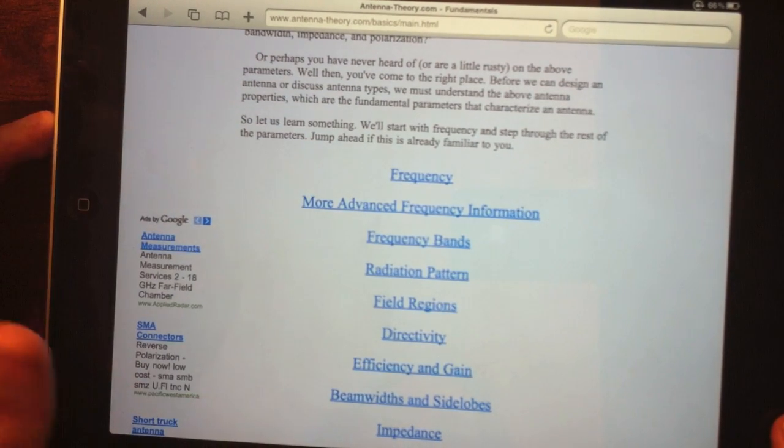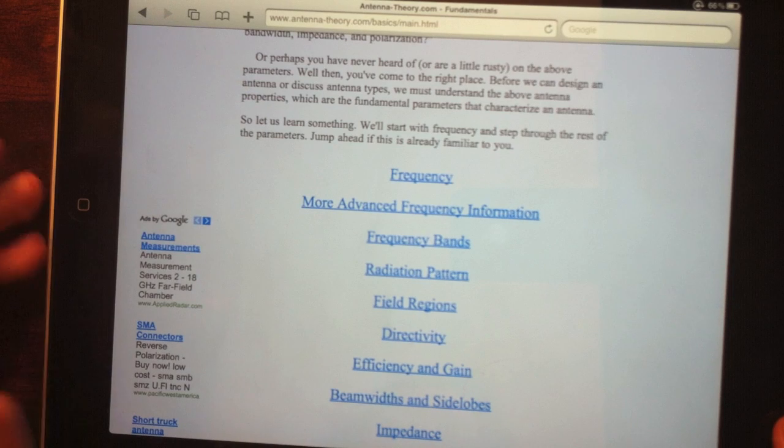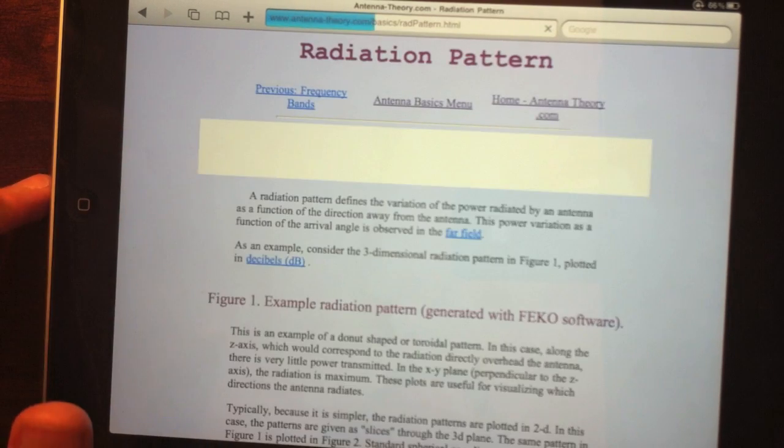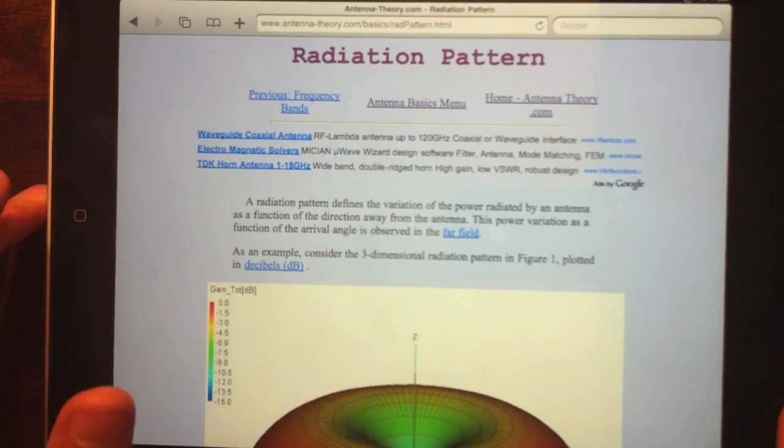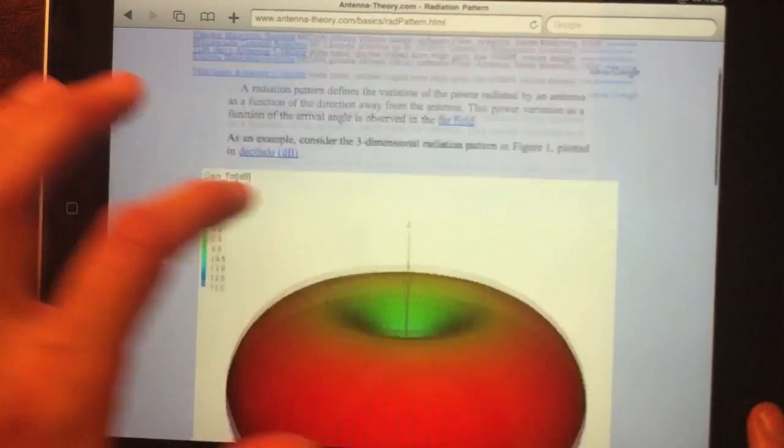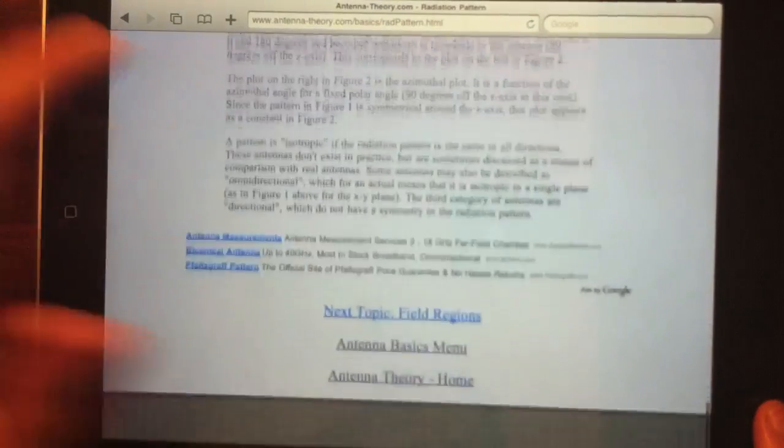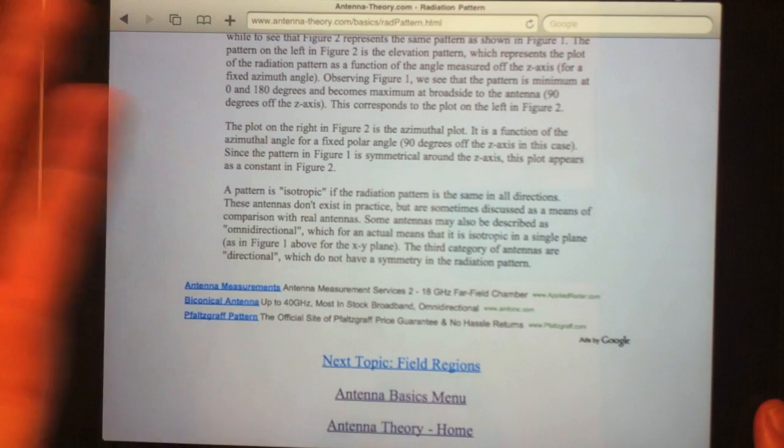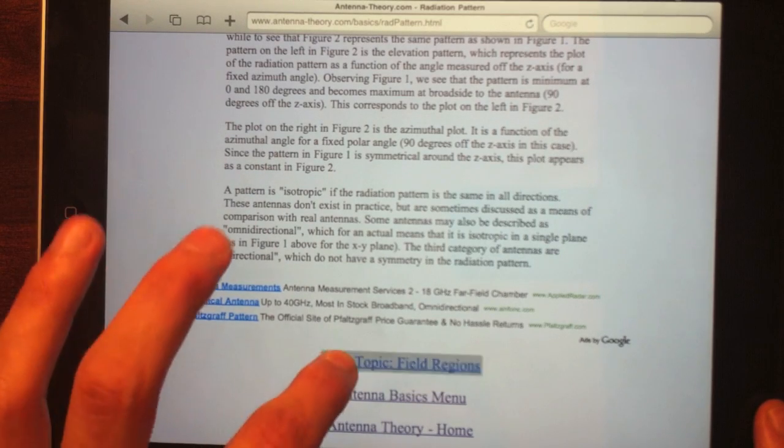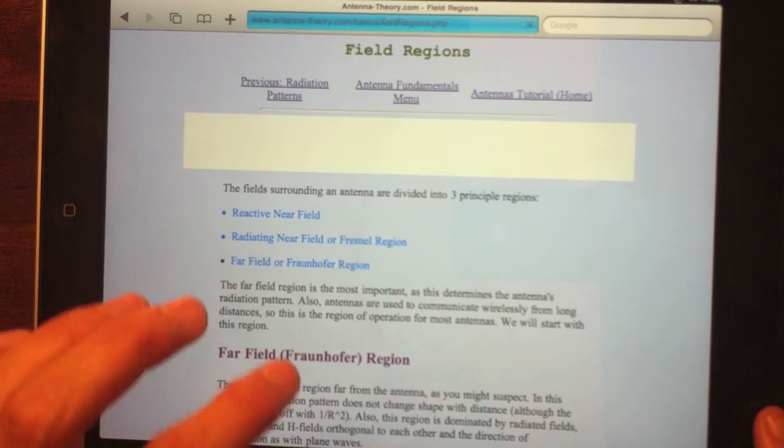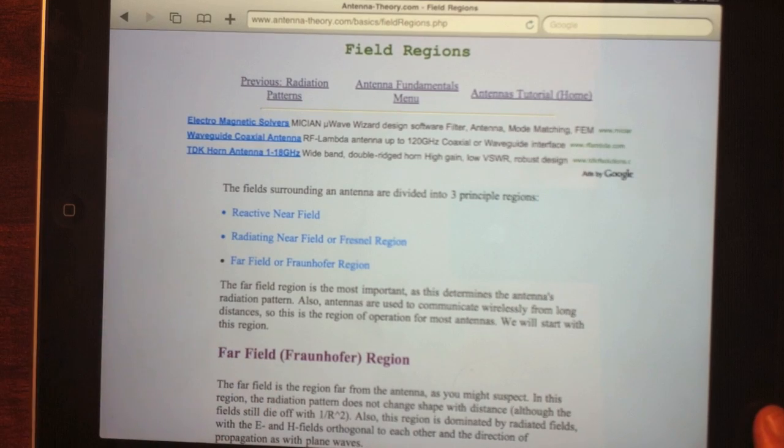Here you can walk through the fundamentals of antenna theory, kind of like a textbook. So you start with frequency, work your way through, understand the very basics of antennas, like for instance, look at radiation pattern, go through, read all this, and it's kind of organized like a textbook. Once you understand this section, you can go to the next topic, field regions, and go through and read through it like that.